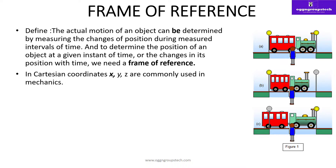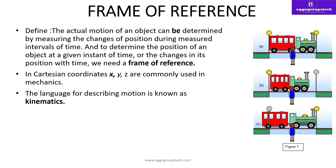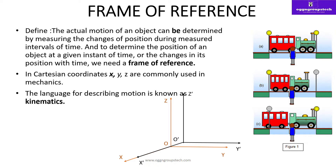Frame of reference کو measure کرنے کے لیے ہمیں coordinates کی ضرورت ہوتی ہے۔ وہ coordinates ہیں x, y, z۔ 2D کے لیے x, y اور 3D کے لیے x, y, z use کرتے ہیں۔ The language of describing motion we call kinematics. یہاں پہ یہ x-axis ہے، یہ origin ہے، یہ y-axis ہے، یہ z-axis ہے — یہ ایک Cartesian coordinate system draw کیا ہوا ہے۔